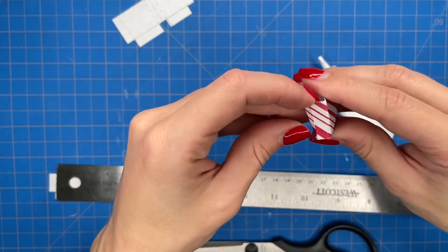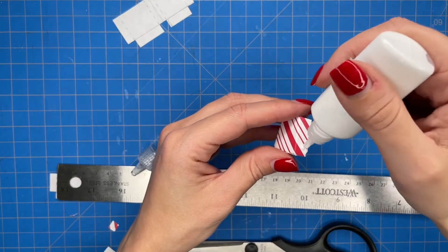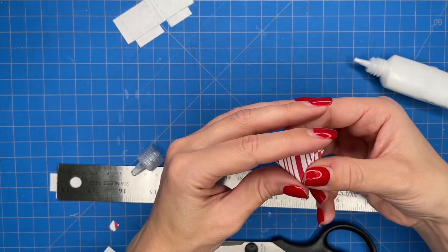You're going to do the same thing with the side flaps. Just apply some glue to them and then hold the flaps down until they are secure. Usually you want to hold it down for maybe about a minute until the glue starts drying.